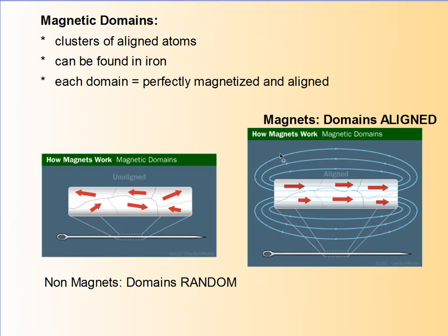Domains are the fundamentals of magnets. They're just clusters of aligned atoms and they can be found quite naturally in iron. Each domain is perfectly magnetized and aligned. This is a picture of a needle that is not magnetized, and you can see the domains are all random — one's going this way, one's going this way — so this is not magnetic. When we align them, say by stroking this with a strong magnet, then the domains line up and suddenly this needle becomes a magnet itself.